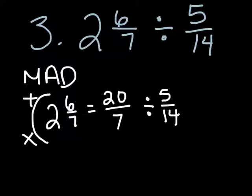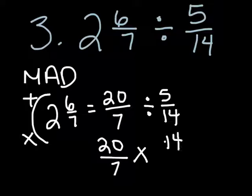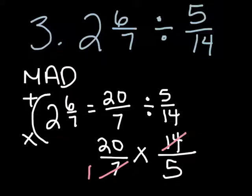That equals 7 times 2 is 14 plus 6 is 20 over 7 divided by 5 fourteenths. Let's change it into a multiplication problem. 20 over 7 times, flip our second fraction, 14 over 5. Let me just erase that extra mark there. We should cross-simplify whenever we can. In this case, we can cross-simplify twice.